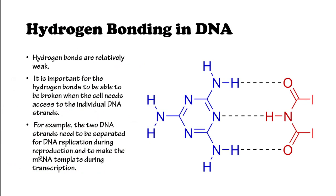The base pairs are held together with hydrogen bonds. Hydrogen bonds are relatively weak. It is important for the hydrogen bonds to be able to be broken when the cell needs to access the individual DNA strands. For example, the two DNA strands need to be separated for DNA replication during reproduction and to make the mRNA template during transcription.